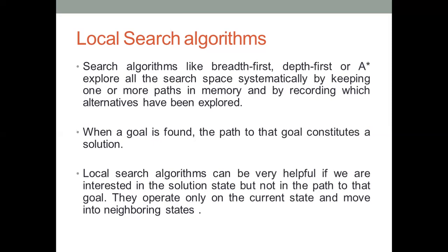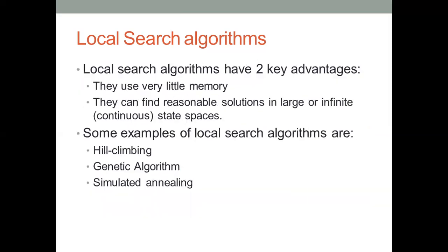In local search we have one possible solution or state, and from that we have the next possible neighbor nodes — we are just going to focus on those alone. That is called a local search algorithm. It explores all possibilities, verifying all possible moves, and it uses very little memory and has an infinite search space.